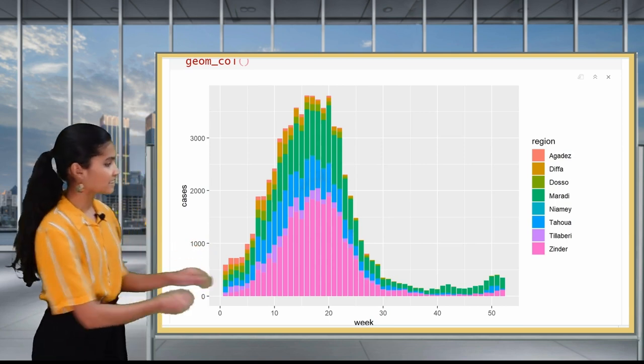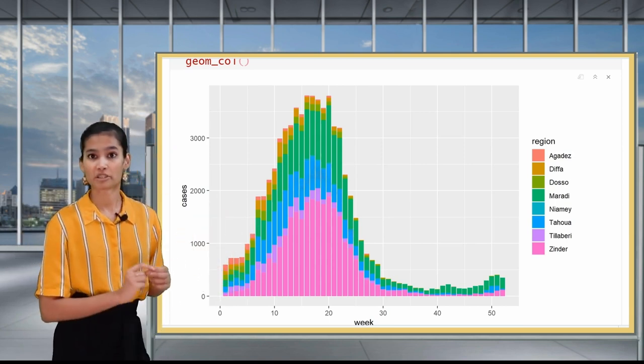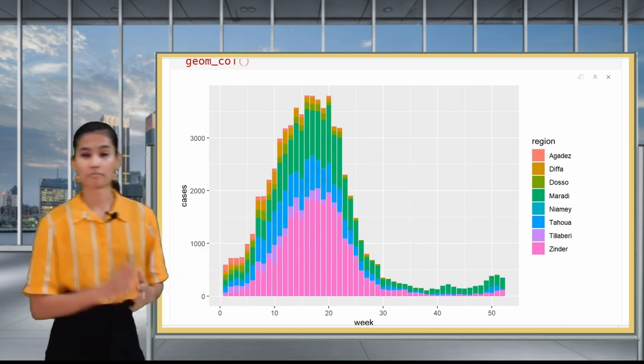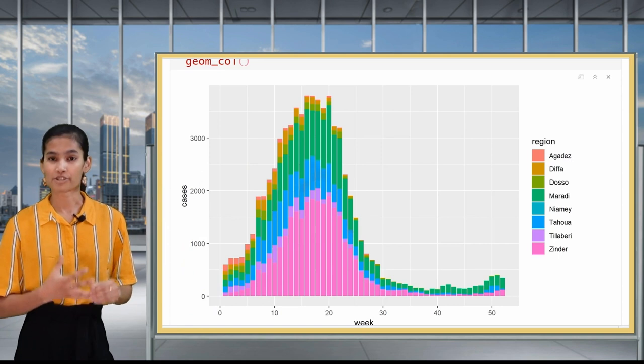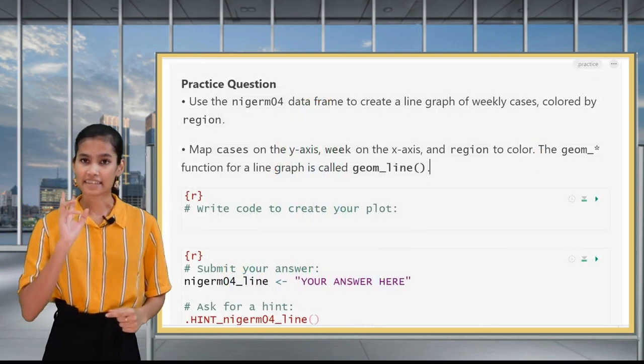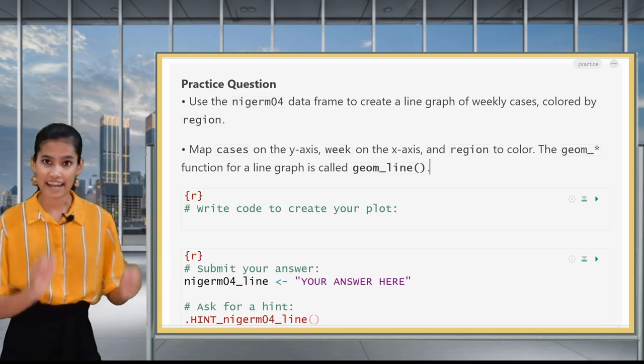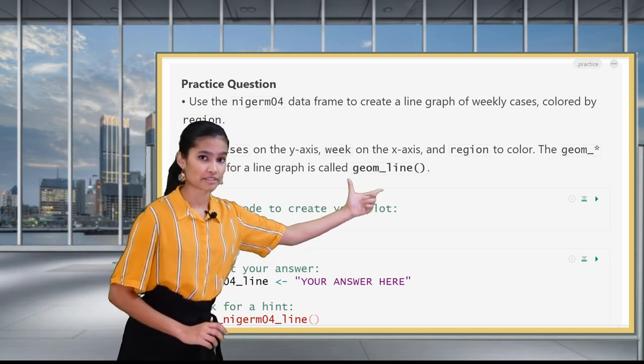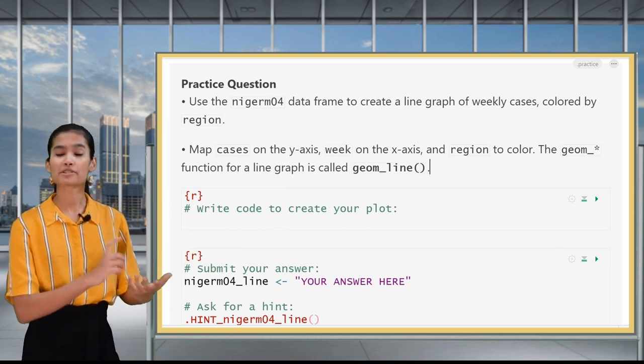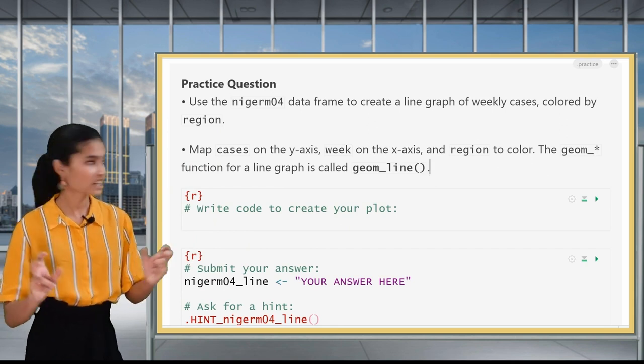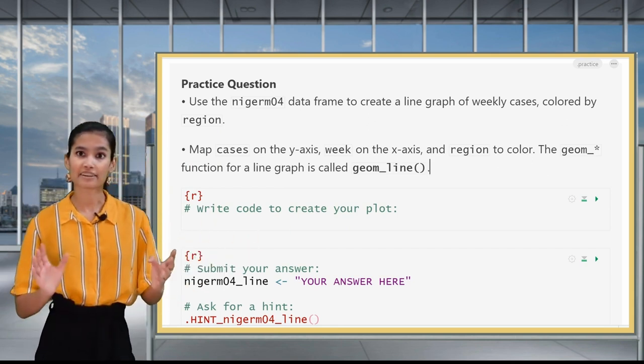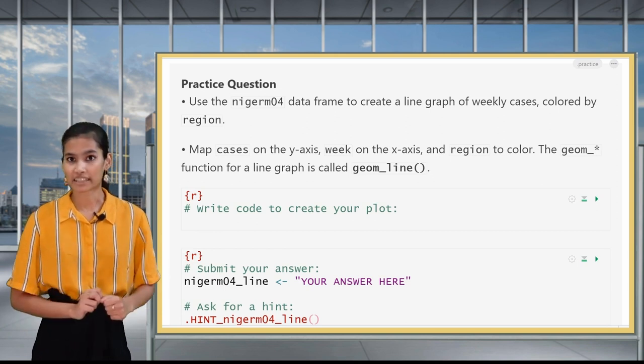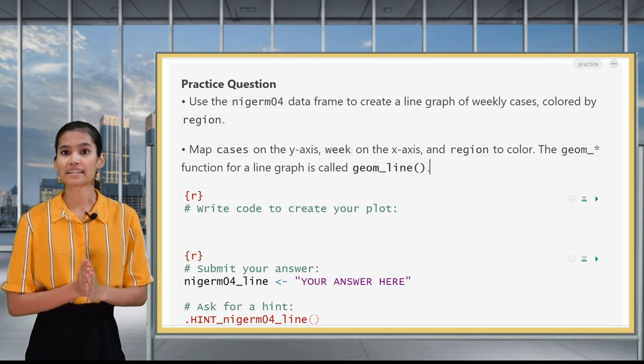Let's now change the inside of the bars instead. For this we'll use a new aesthetic called fill. So here we just make a small change to the code and change color to fill and we still want fill equal to region. When you run this code you will get another stacked bar plot except this time the inside of the bars is colored. Here again you can see that the largest segments belong to the same regions that we saw had a high number of cases in the scatterplot. The pink, blue, and green bars from Zinder, Niamey, and Maradi are still shown to contribute the most cases. Now you can practice applying the color aesthetic to a new type of plot, line graphs.